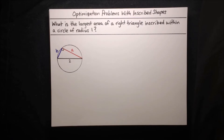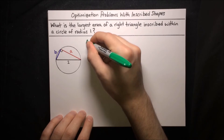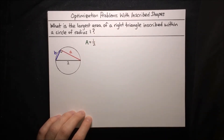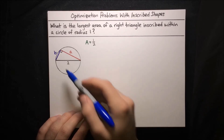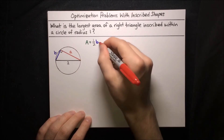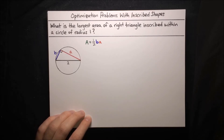Let's write an expression for the area of this triangle. The area of a triangle is given by A equals one half times base times height. Let b be the base and a be the height since it's perpendicular to the base, so A equals one half ba. Now we want to maximize this function, and to do that we need to get it down to a function of a single variable, so we'd like to substitute for b in terms of a or a in terms of b. We can do that if we find an equation relating a and b.